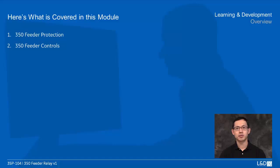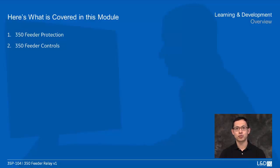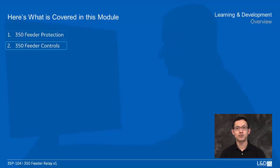Welcome to 3SP104, the 350 feeder relay module. In this module we'll introduce the protection and control elements and functions specific for 350 feeder relays. The common functions of the three series introduced in the previous module 103 won't be repeated but will be used as a reference. Two major contents in this module will be 350 feeder relay protection and 350 feeder relay controls.